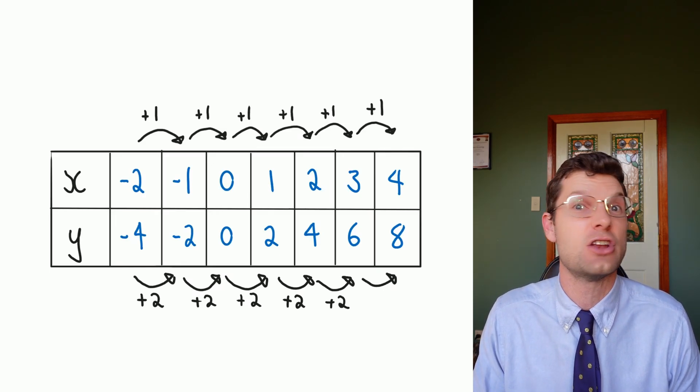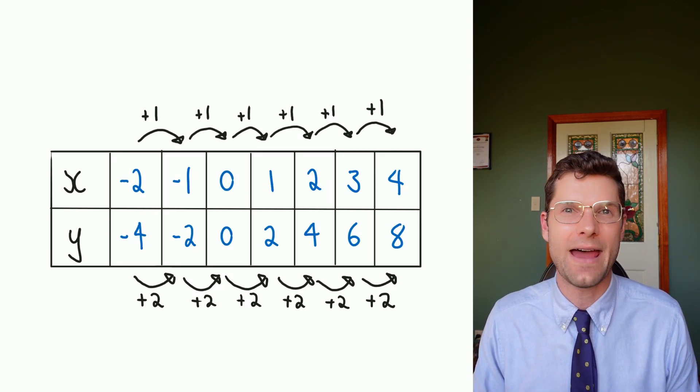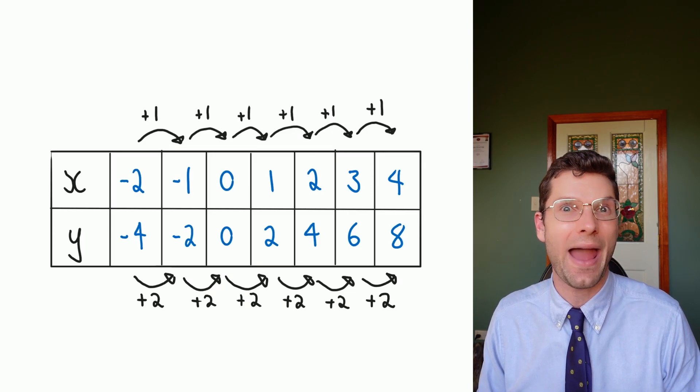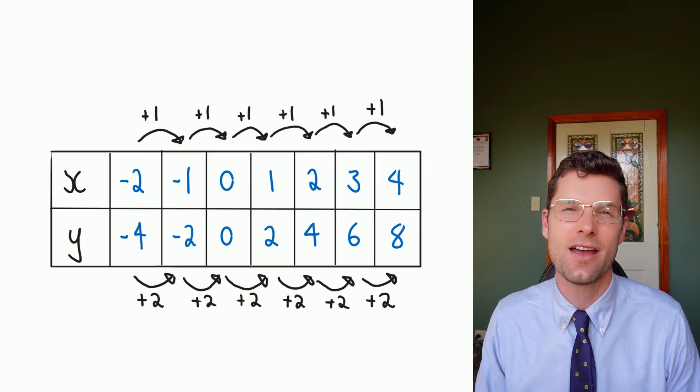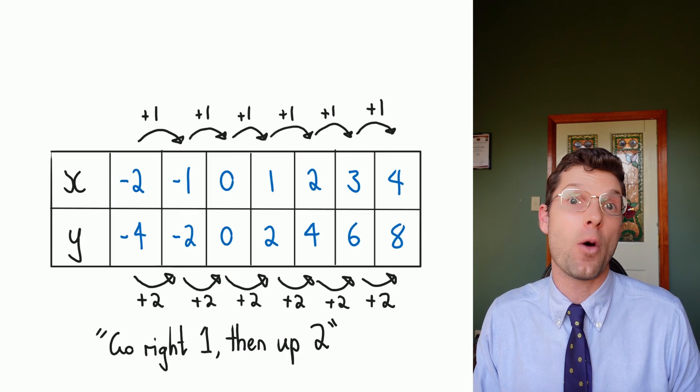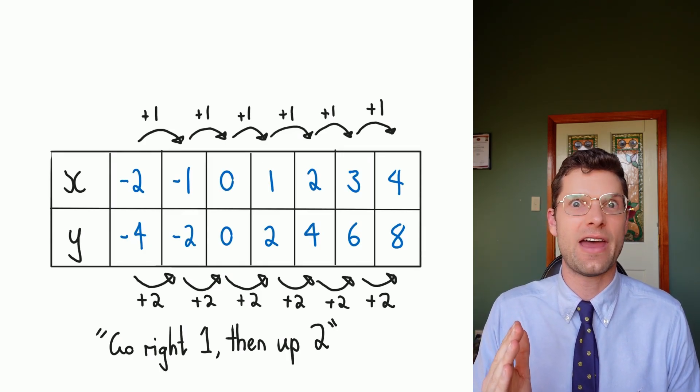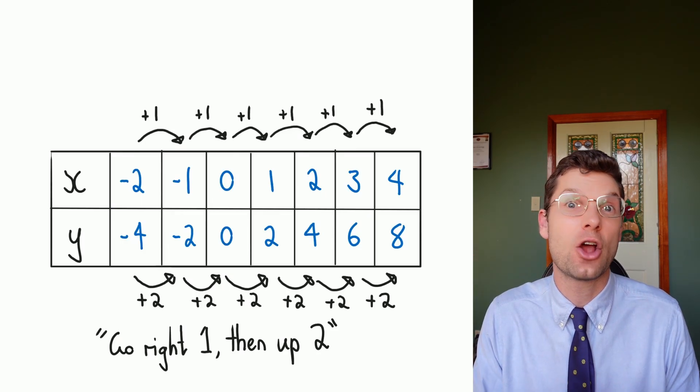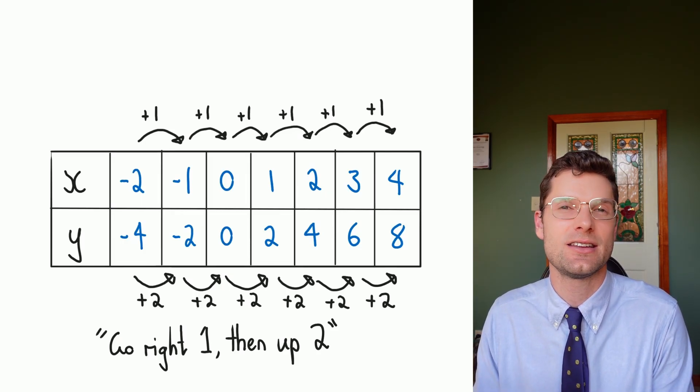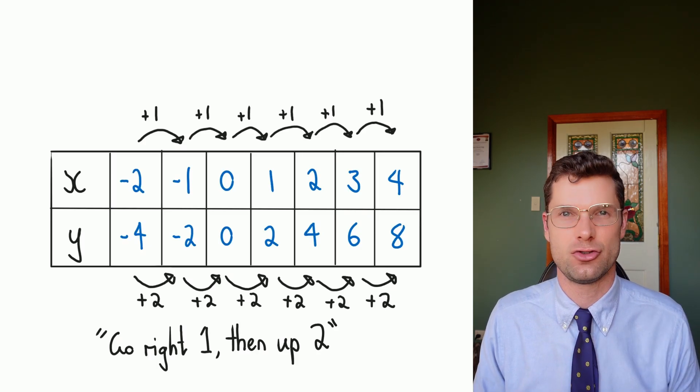you're actually like 80% of the way to knowing everything there is to know about linear relationships. This pattern is the fundamental idea that we have to latch onto. What that means for the graph is that at every point, we go across one, up two. And then when I'm there, across one, up two. And because this is repeating so consistently, that's why it is that dead straight line.